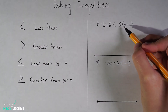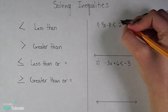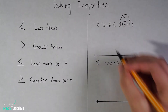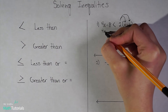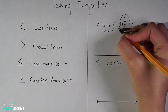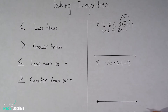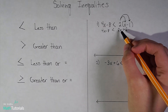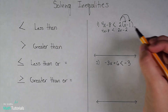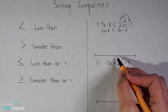Looking at step one — thinking about the last video — step one was to use the distributive property to get rid of any parentheses. So I see I've got some parentheses here I need to get rid of. I'm going to bring down 4x minus 8 is less than. 2 times x is 2x, and 2 times negative 1 is negative 2. Now, I want to get all my variables to the left and my constants to the right. It's really important that we get the variables to the left because there's a trick I'm going to show you when it comes to graphing.